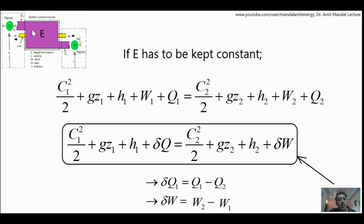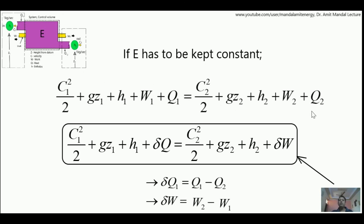So, if steady flow is present and we want to keep the total energy content per unit mass of the control volume constant, then total energy input must equal total energy output of the system through which flow is happening. Hope by this small lecture you would have understood the concept of the steady flow energy equation. Thank you.